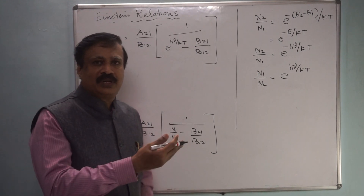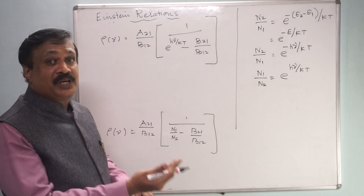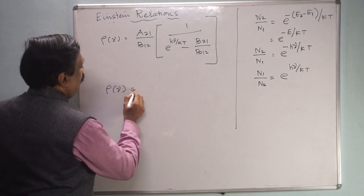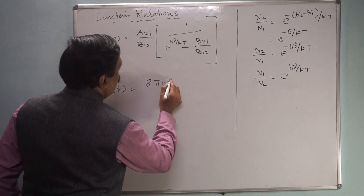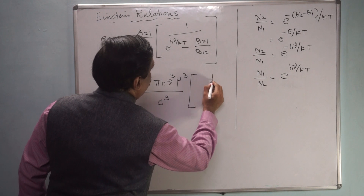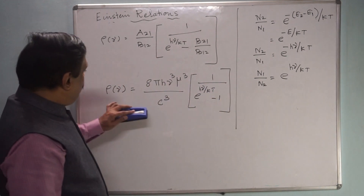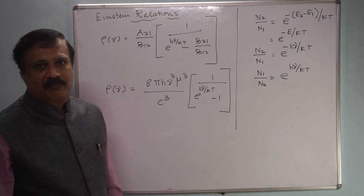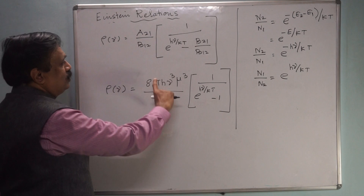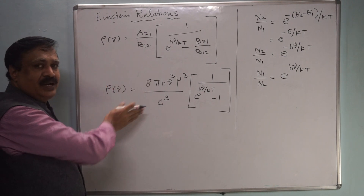These absorption and emission processes take place in the electromagnetic spectrum, so we can apply the blackbody radiation equation here. Planck's blackbody radiation equation is: ρ(ν) = (8πhν³μ³/c³) × 1/(e^(hν/kT) − 1). Now compare this equation with our derived expression. The left-hand sides are the same, so we compare the right-hand sides.